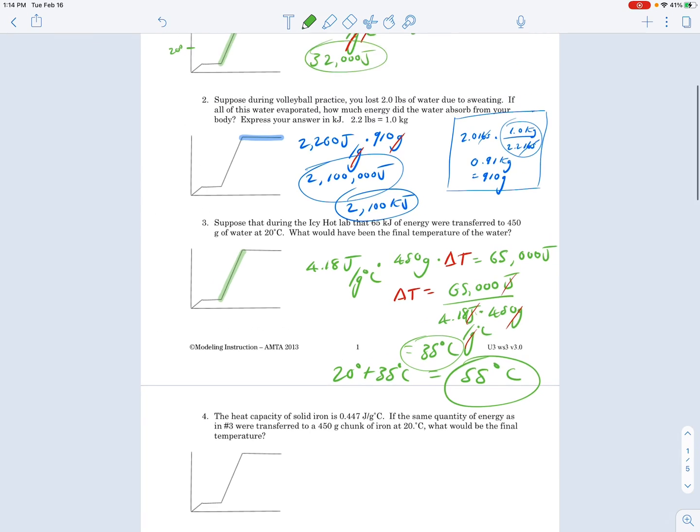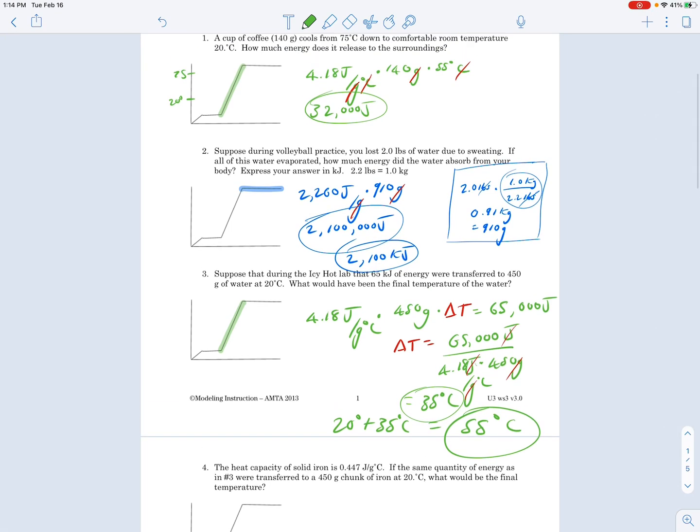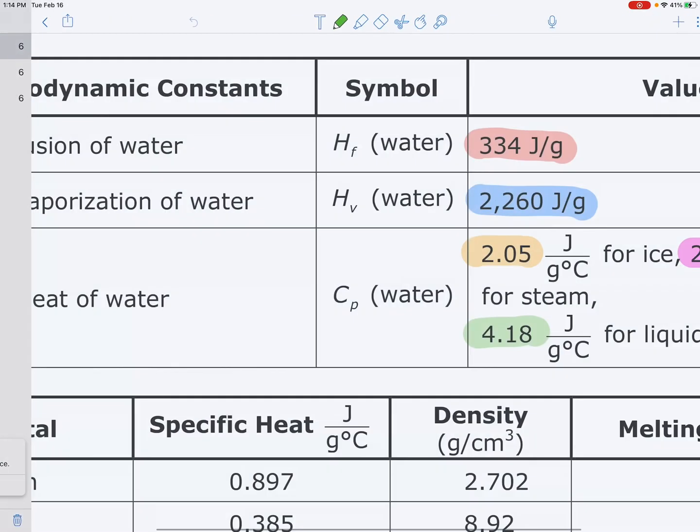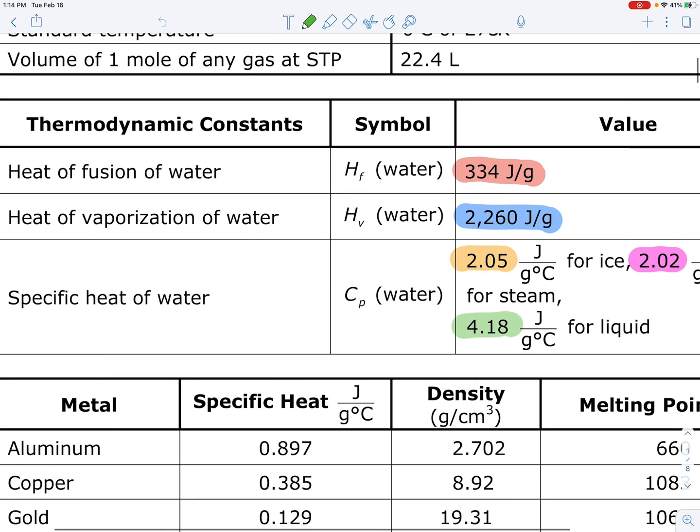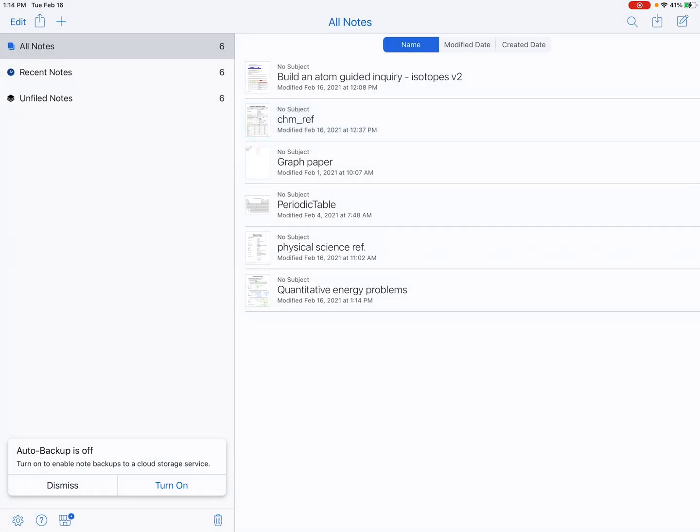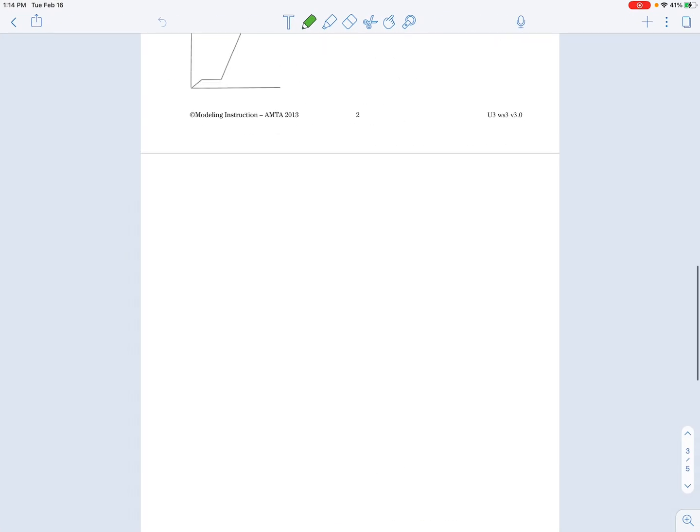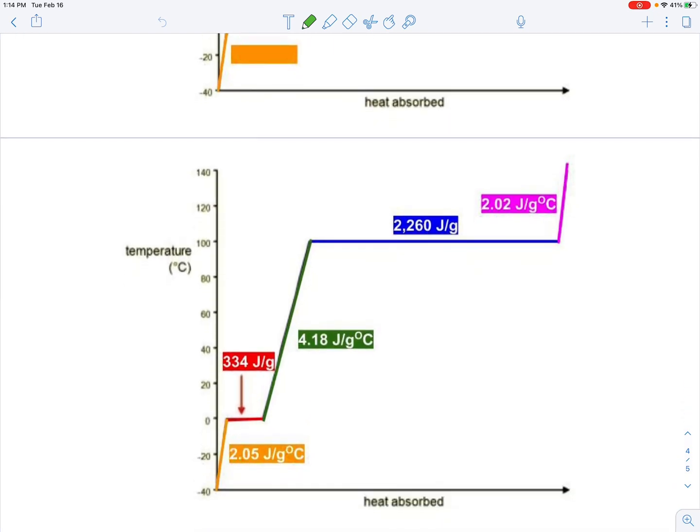So that's how you do these problems. Find out which part of the heating curve you're dealing with. Choose the appropriate constant that you need to work with, which is on the front page of your reference table. If you know what constant you're going to work with, you will know how to start the problem off.